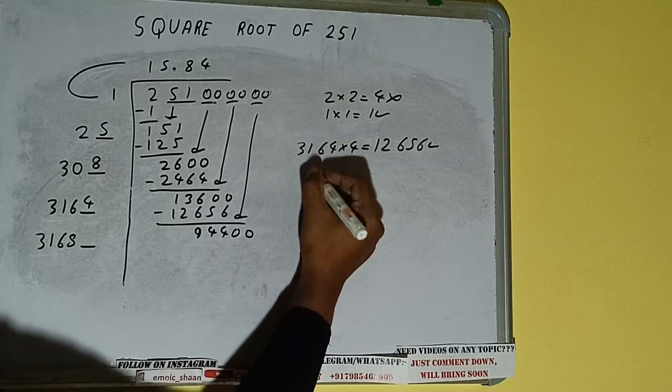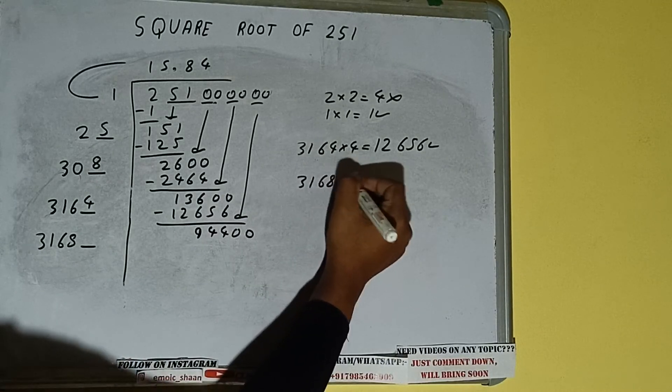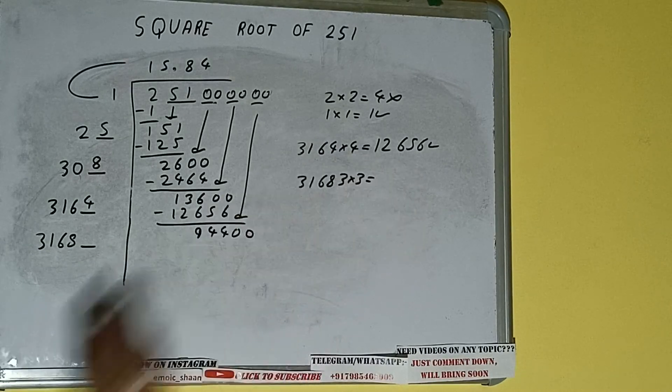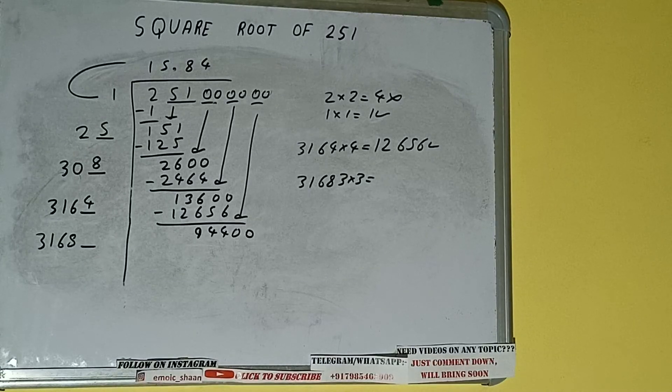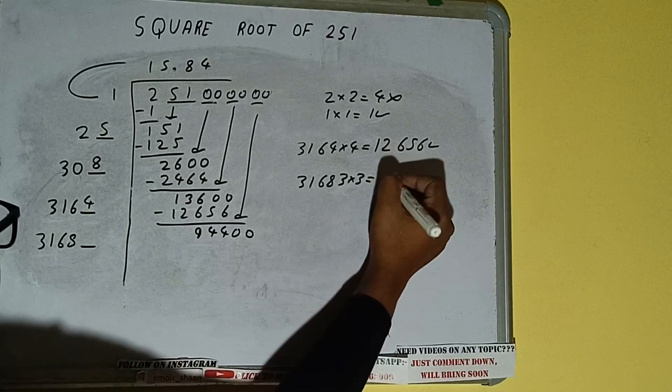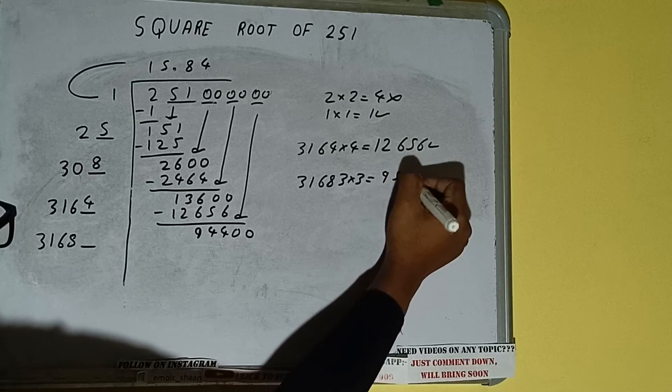So we can try three times. 31683 into three we can try, and we'll be having 95,049.